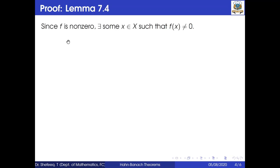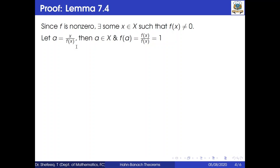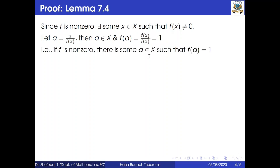Proof of Lemma 7.4. Since f is non-zero, there exists some x belonging to x such that f of x is not equal to 0. Now let a equal to x divided by f of x, then a belongs to x and f of a equals 1. That is, if f is non-zero, then there is some a belonging to x such that f of a equals 1.